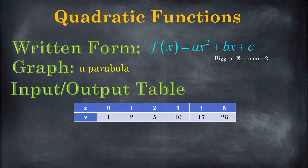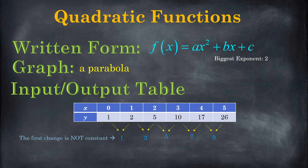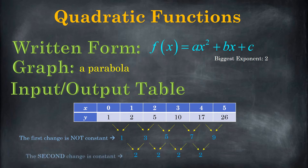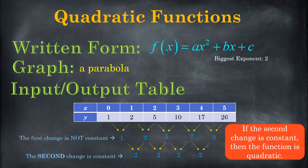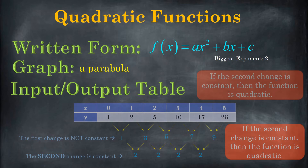Now let's talk about the input-output table. Let's say you're given this input-output table and you're being asked to identify what kind of function it is. You just compare the consecutive outputs, just like you did before. But here what we see is the first change is not constant — one, three, five, seven, and nine. So you repeat that process and take the difference of those changes. What you find is that the second change is constant. So if you find that the second change is constant, then what you have is a quadratic function.